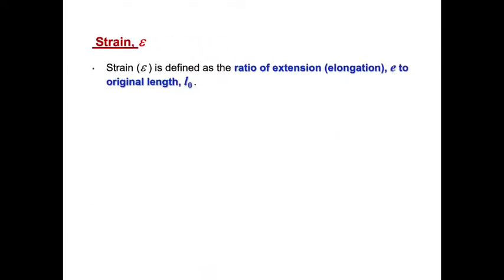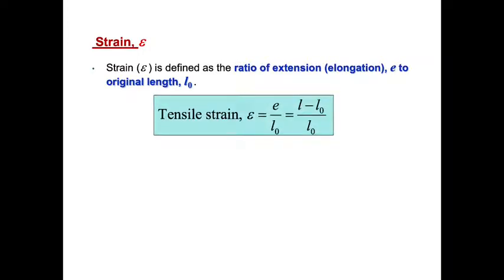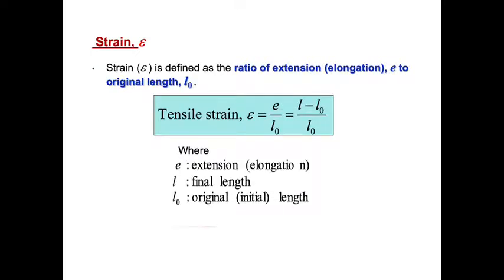Strain, or epsilon (ε), is defined as the ratio of the extension, or elongation E, to the original length L₀. Mathematically, strain epsilon is equal to E over L₀, which is extension. Extension is the length after the rod is extended or compressed minus the original length over original length. Strain is a scalar quantity without unit, because extension has unit of meter, and the original length also has unit of meter. So, meter over meter will be 1, there is no unit for strain.